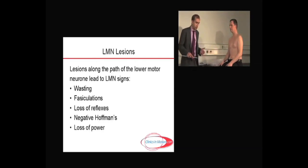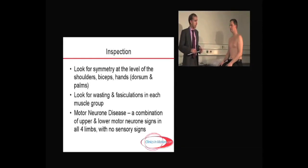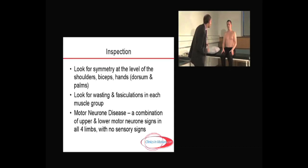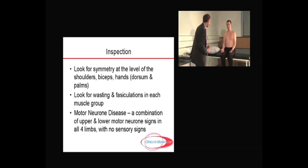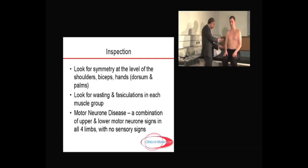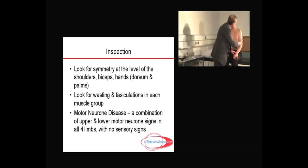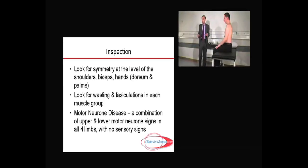In approaching the motor examination of the upper limb, the first thing you must do is observe. Muscles must be observed at rest, looking for wasting and fasciculations. Take a small step back to see if there's symmetry at the level of the shoulders, biceps, and hands, then turn the hands over to look for small muscle wasting in the hands, which can often come up in clinical exams. Then look for wasting and fasciculations in each muscle group, as sometimes they can be quite subtle.